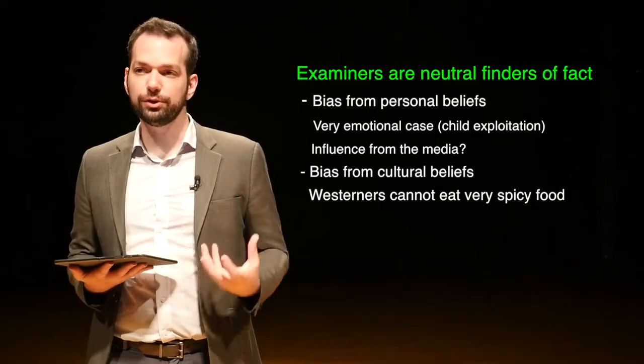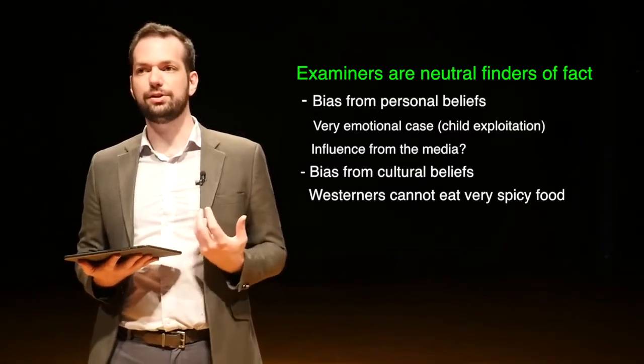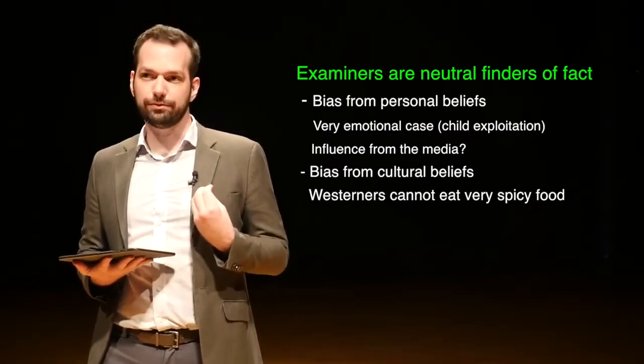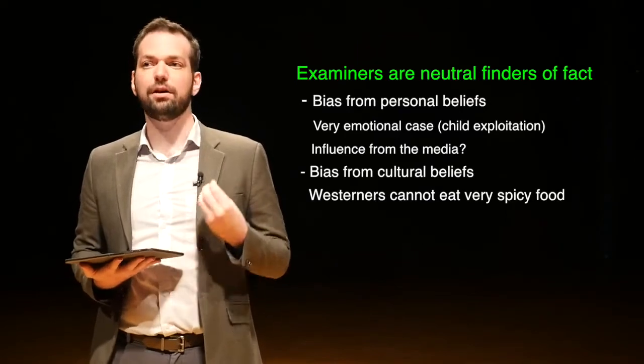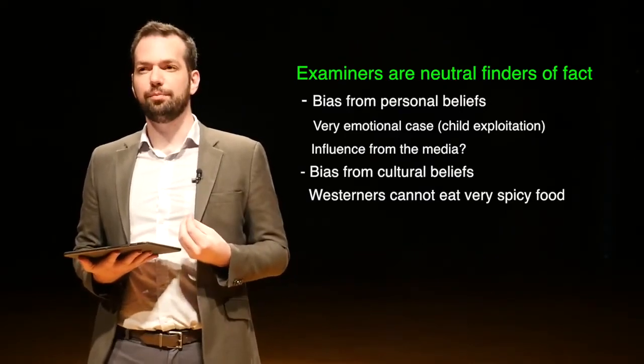In very emotional cases, for example child exploitation cases, you might see a lot of really bad things on the suspect's computer, and that will make you want to blame someone. The obvious choice is the suspect. Even if the suspect didn't necessarily do it, your emotional state might cause you to look for evidence that makes the suspect guilty when they're actually not. Think about your emotions during investigations and how you can keep those in check.